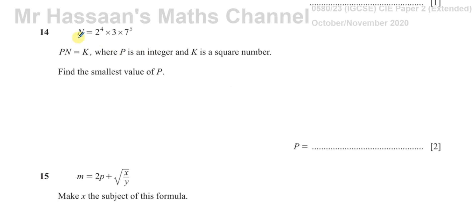Here we have a question which tells us that n is equal to 2 to the power of 4 times 3 times 7 to the power of 5. And it says p times n equals k, where p is an integer and k is a square number. Find the smallest value of p.